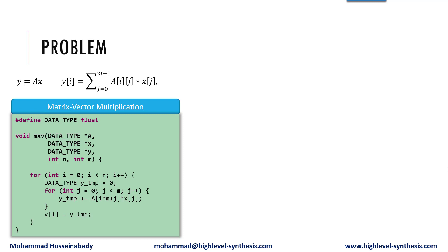The code consists of a two-level loop nest that reads the matrix A and vector X and generates the output elements located in Y.